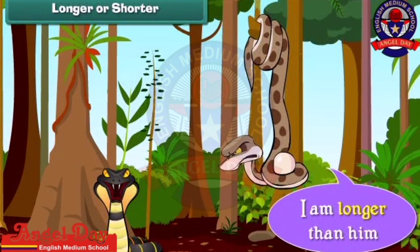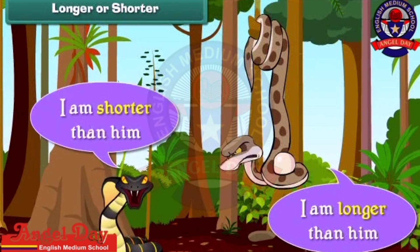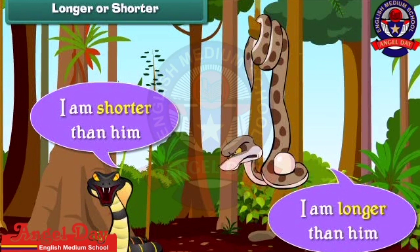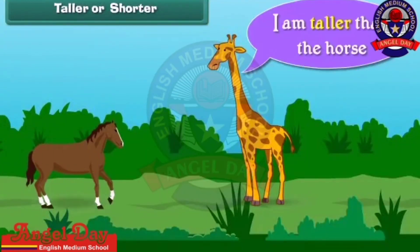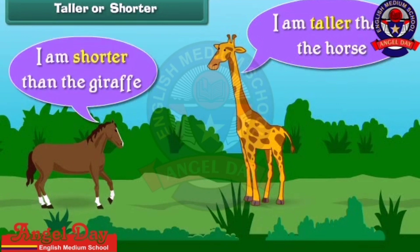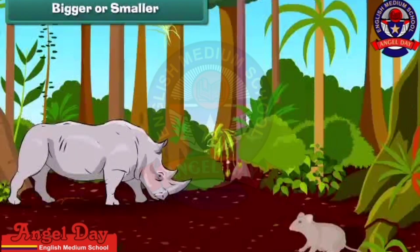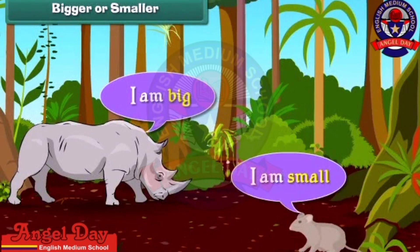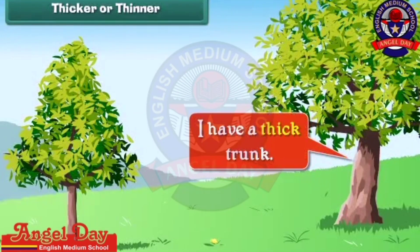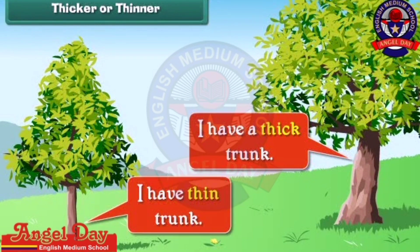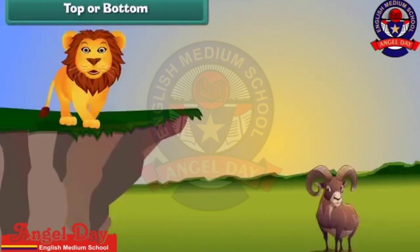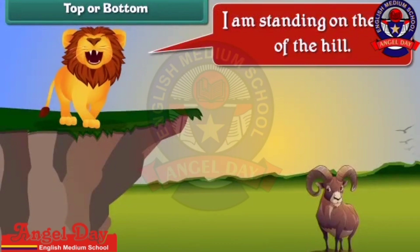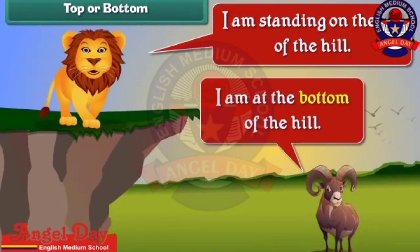I am shorter than him. I am taller than the horse. I am shorter than the giraffe. I am big. I am small. I have a thick trunk. I have a thin trunk. I'm standing on the top of the hill. I am at the bottom of the hill.